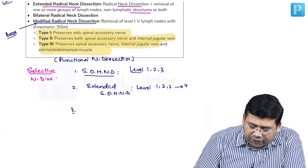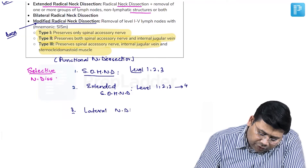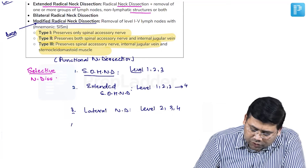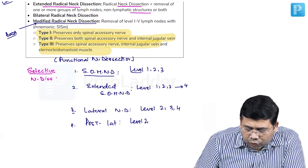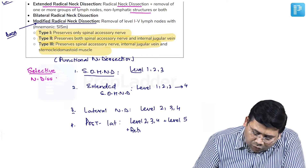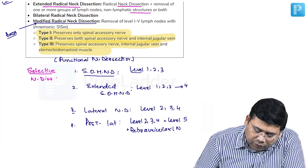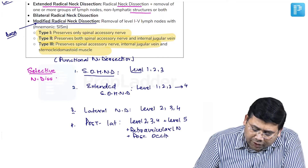The third type is lateral neck dissection, where we remove level 2, level 3, and level 4 lymph nodes. Then we have posterolateral neck dissection, where we remove levels 2, 3, 4, and 5, along with the retroauricular group of lymph nodes and the posterior occipital lymph nodes.